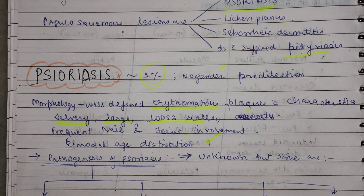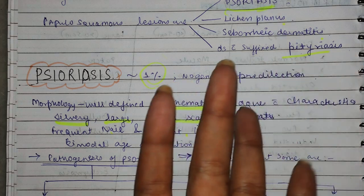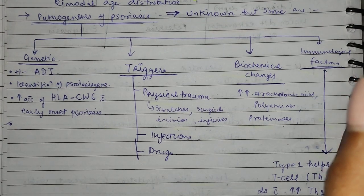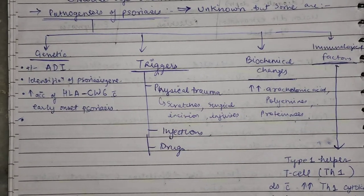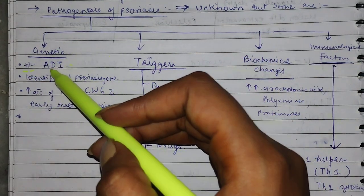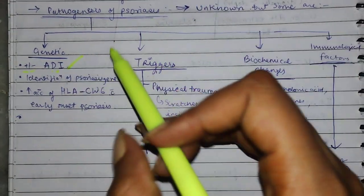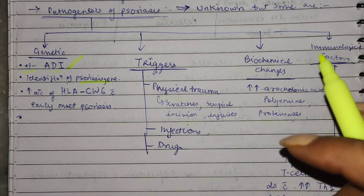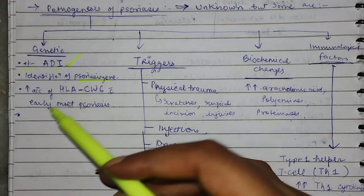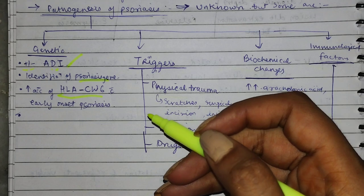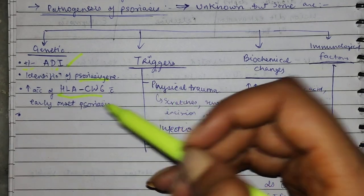Now let's look at pathogenesis of psoriasis. The proper cause is unknown. But there are possible causes. First of all, genetics — it may be autosomal dominant inheritance. Psoriasis has also been identified with a genetic basis. In addition, this association is also seen with HLA-CW6 — the human leukocyte antigen — with the MHC complex, this association is also seen.